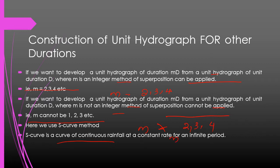In the S-Curve method, M is a decimal value — it can be less than 1, such as 0.5 or 0.6, or greater than 1, such as 1.5 or 2.3. When M is not an integer, we use the S-Curve method. The S-Curve is defined as a curve of continuous rainfall at a constant rate for an infinite period.